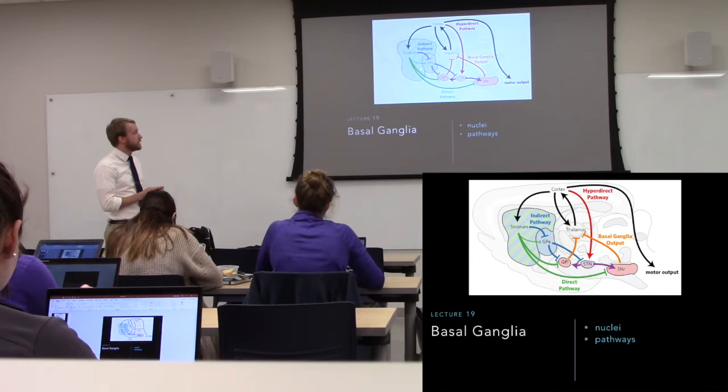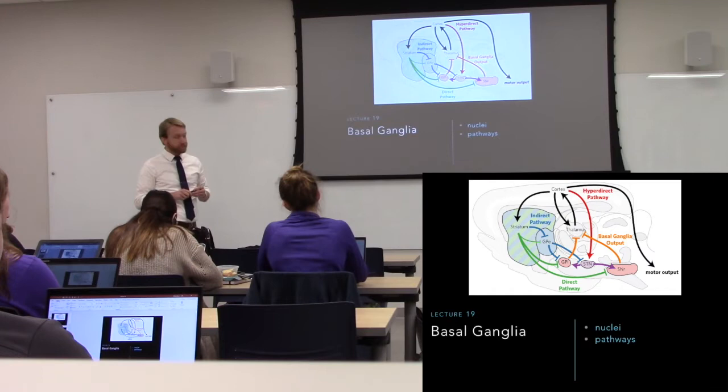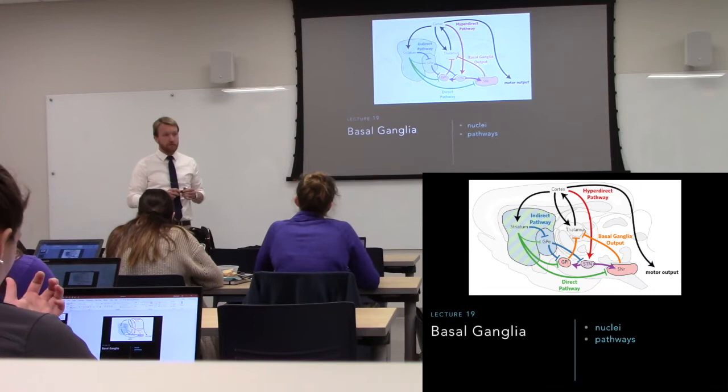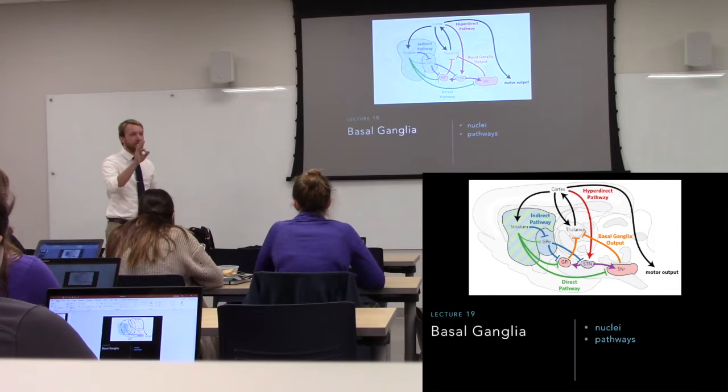Then we have a middleman — the GPe, the external globus pallidus. You'll see why it's external when we see a coronal slice. We have them too. Then we have our output nuclei: the GPI, or internal globus pallidus — they're both pale globes, hence the name — and the substantia nigra pars reticulata, very close to the SNc, also an important player. We'll hit all the nuclei and then string them together to go through our three pathways.